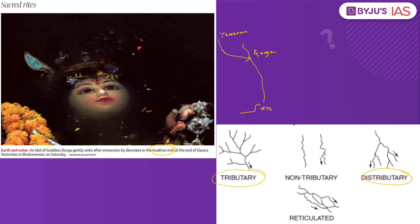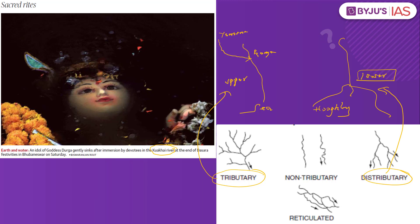What is a distributary? Taking the example of Ganga, there are other rivers which emerge out of Ganga. So if a river is emerging out of or flows away from the parent river or mainstream river, that is called a distributary. One such example is Hooghly. Remember, a tributary is usually seen in the upper course of a river, but a distributary is usually seen in the lower course. As an assignment, put in the comment section which are the other tributaries and distributaries of important rivers in India.